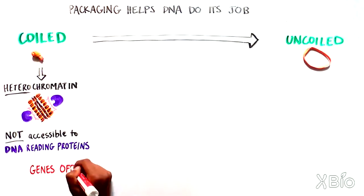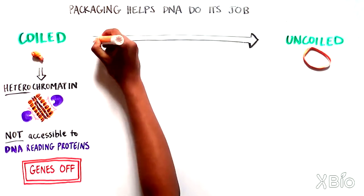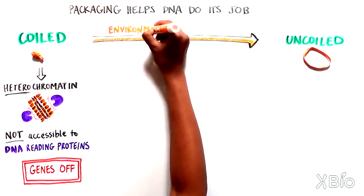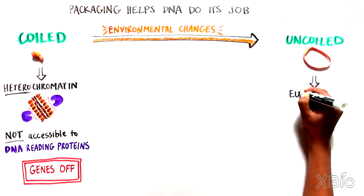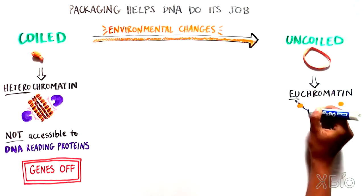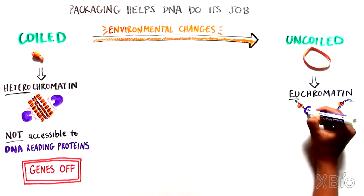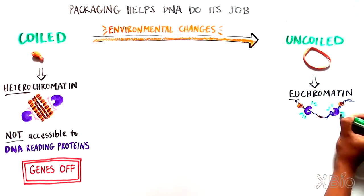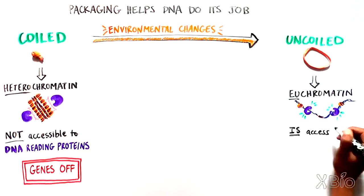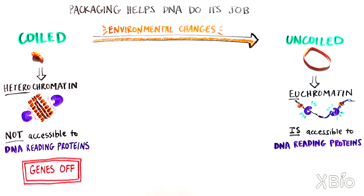In response to environmental changes, however, histones are altered through a variety of molecular processes, which triggers the DNA to uncoil into a more relaxed state, known as euchromatin. Euchromatin is accessible to DNA-reading proteins, thus turning the necessary gene on.